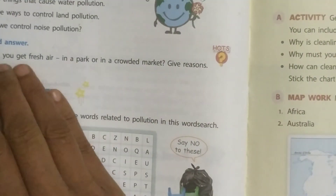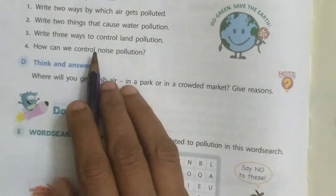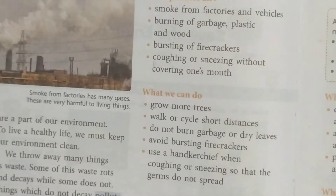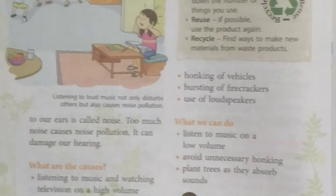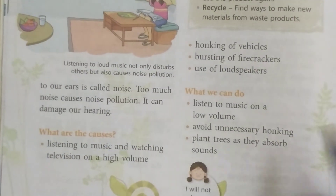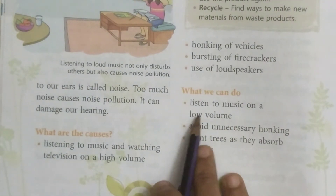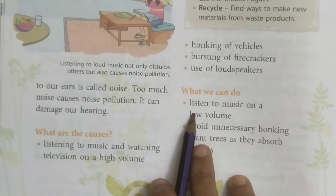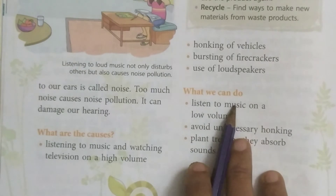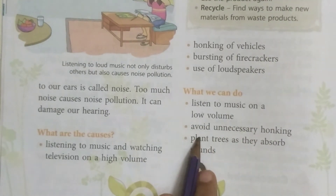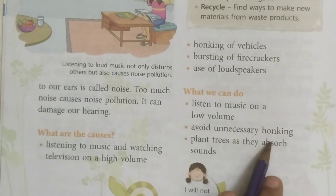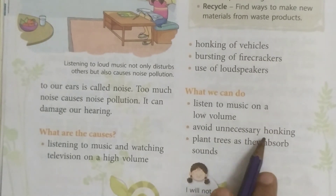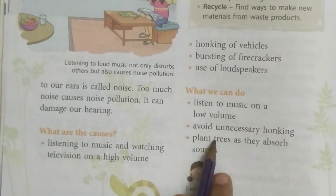The last question: how can we control noise pollution? We can control noise pollution in three ways. First: listen to music or watch television on a low volume. Second: avoid unnecessary honking when you are traveling. Third: plant trees, as they absorb sounds. By these ways you can control noise pollution.